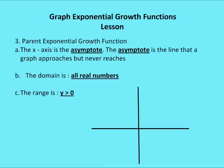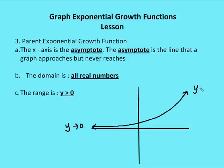Let's talk about the parent exponential growth function again. As x gets more and more negative, the value of y approaches zero. As x gets more and more positive, the value of y approaches infinity. But the value of y never gets to zero or a negative number.